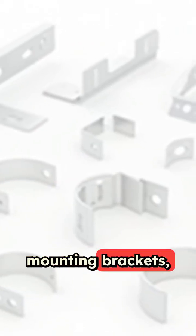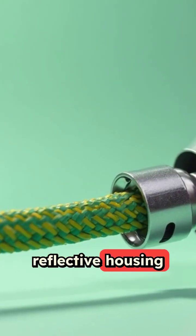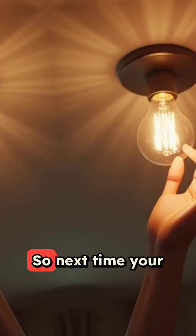You'll also find mounting brackets, earth grounding wires, and sometimes a reflective housing that helps distribute light evenly across the room. Ever noticed how light spreads so smoothly? That's intentional design at work.